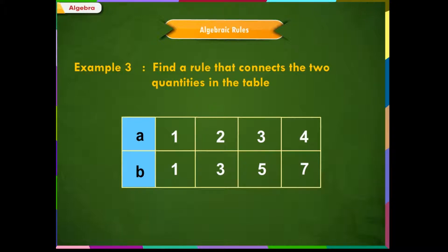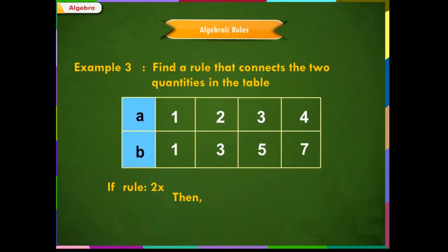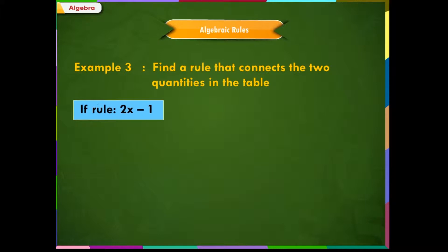If we write the rule as 2x, then for x is equal to 1, we get 2x is equal to 2. But we have 1 here in B row. So, if we write the rule as 2x minus 1, then for x is equal to 1, we get 2x minus 1 is equal to 2 into 1 is 2, and minus 1 is 1. And we get the first number in B.